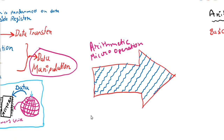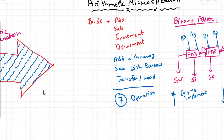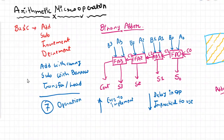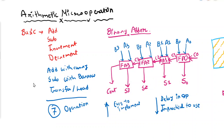The next topic is Arithmetic Micro operation. Let us see the various Arithmetic Micro operations. They can be categorized into two categories: basic and non-basic. The basic Arithmetic Micro operations are: addition, subtraction, increment, and decrement. In addition to these four, we also have addition with carry, subtraction with borrow, and transfer or load. So there are a total of seven Micro operations considered part of Arithmetic Micro operation.